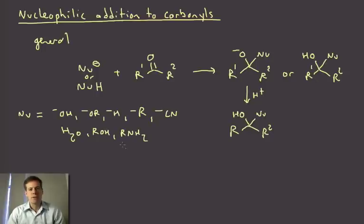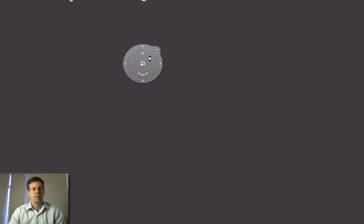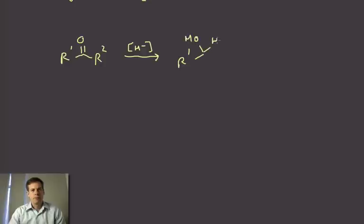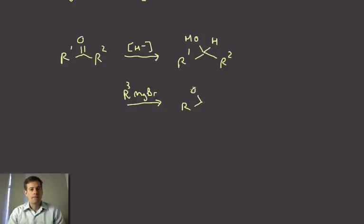We'll discuss each of these in turn, but we actually already learned about two of these, although we didn't go into the mechanism in much detail. We talked about how you can reduce carbonyls to alcohols with hydride, or we can add organometallics like a Grignard or organolithium to a carbonyl.